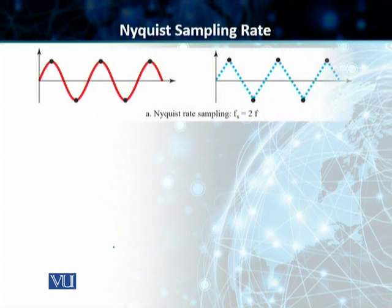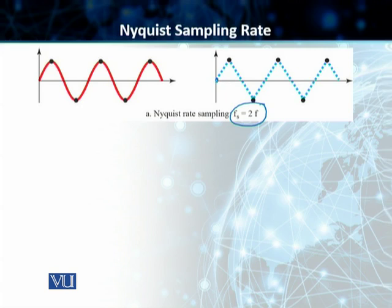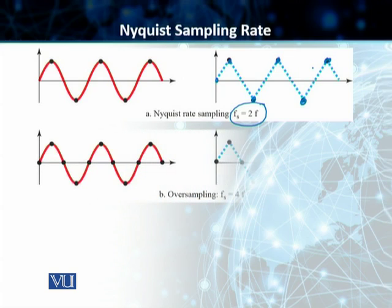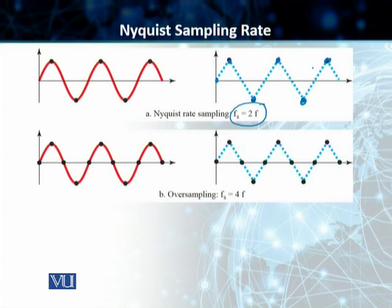In our first image, we are sampling at the Nyquist rate — FS = 2F, where F is the highest frequency of our analog signal. We can see that we are able to reproduce an estimate of the input analog signal using this sampling frequency. In the second case, we are sampling at FS = 4F, which is two times the Nyquist rate — double the Nyquist rate.